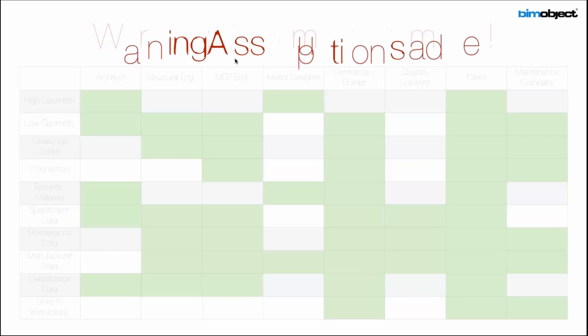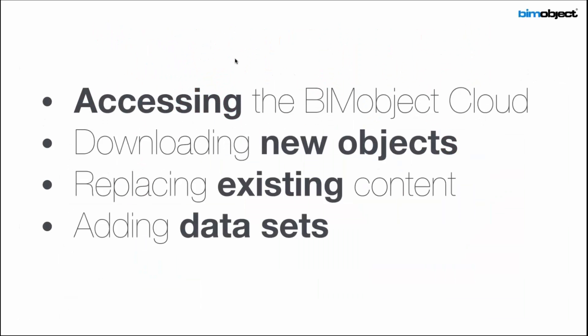Hopefully now you understand how you can access BIMObject.com directly from Vectorworks, how you can download new objects, replace existing content already in your designs to move from design concept to detailed design, and how you can add data sets.